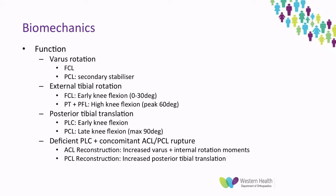For external tibial rotation, the lateral collateral is the primary restraint in early knee flexion. Beyond 30 degrees, the popliteal tendon and popliteal fibular ligament take over as the primary restraint. For posterior tibial translation, the posterolateral corner is the primary restraint in early knee flexion, with the posterior cruciate taking over — which is why we perform our posterior draw tests at about 80 to 90 degrees of knee flexion to elicit this.